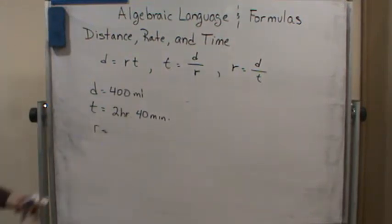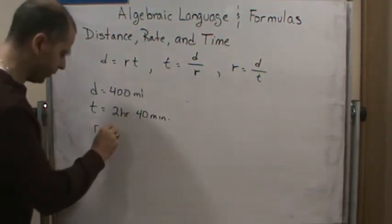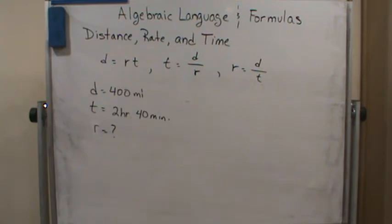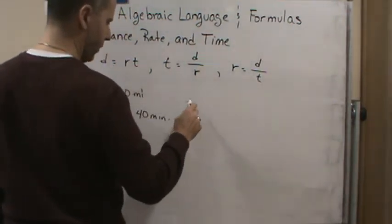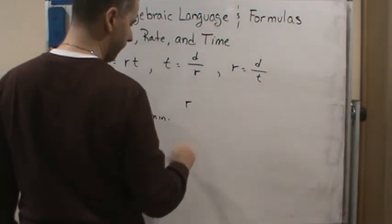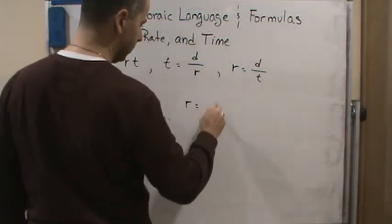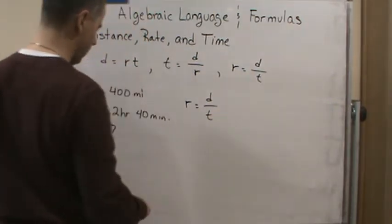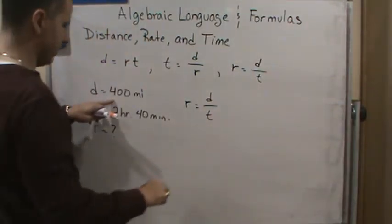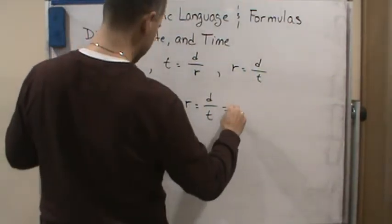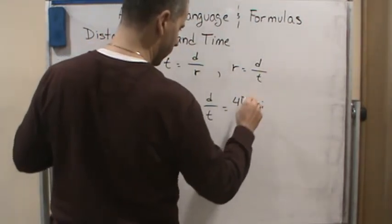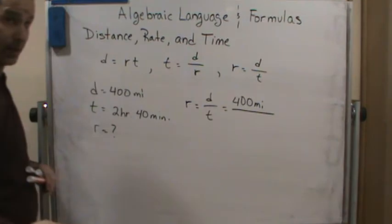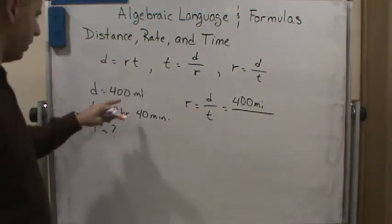So we want to find rate, so that's what we're solving for. We're going to use this formula. So rate equals distance over time. So what's going on? This is 400. I'm going to put the units in because we want to make sure that the units work out. If the units don't work out, we made a mistake somewhere. So we want 400 miles.